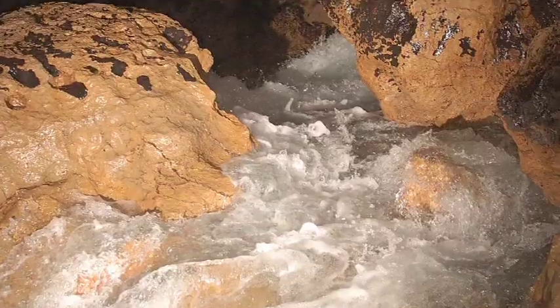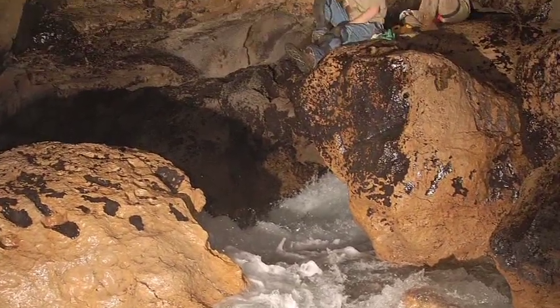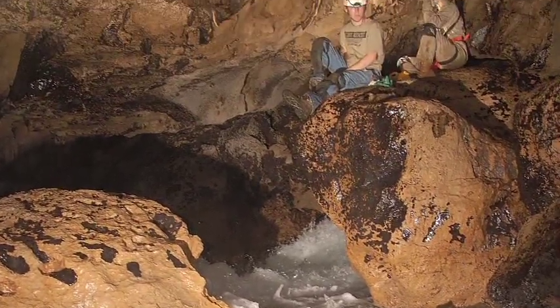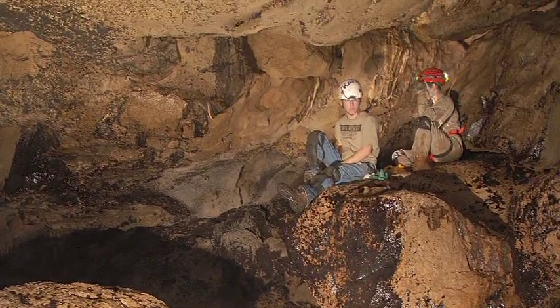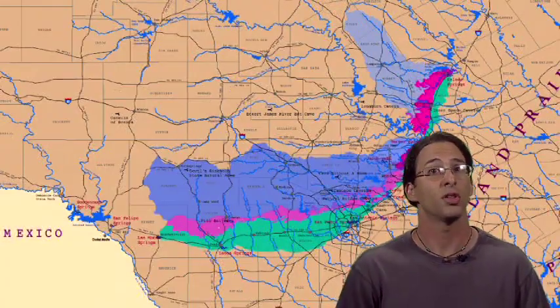The conduits feed into each other, and so we have all this water moving through these pipes. Sometimes, conduits get large enough for you and I to fit into — this is how caves are formed. Every cave was once a small conduit that water flowed in. Eventually, that conduit got big enough for us to fit into, and we call it a cave.